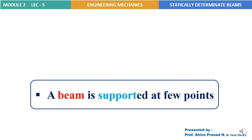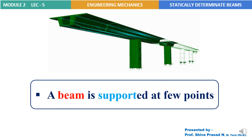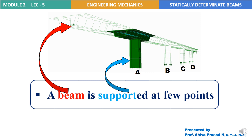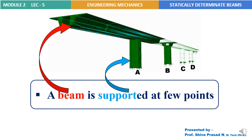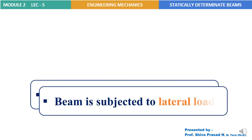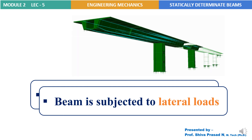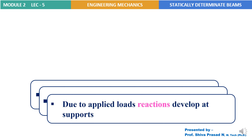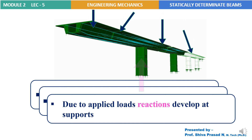Now let's look into the characteristics of beams. A beam is supported at few points. In this example, the supports are A, B, C and D. Unlike in the case of railway lines, which are supported throughout their length, beams are supported only at few points. The beam is subjected to lateral loads; that is, the loads act perpendicular or inclined to the length of the beam. Due to these applied loads on the beams, reactions are developed at the supports. V_A, V_B, V_C and V_D are called the support reactions for the beam in this example.